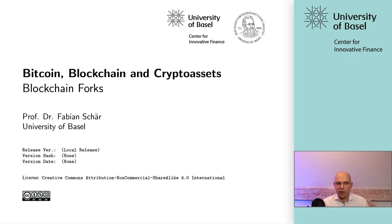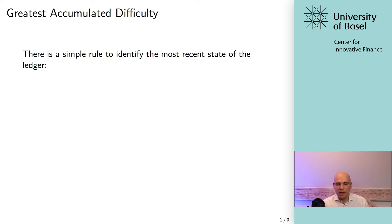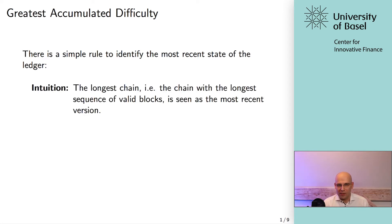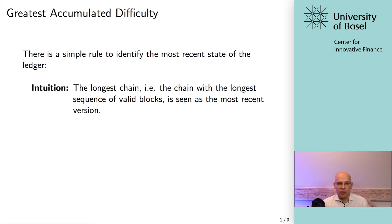We talked about consensus and the proof of work consensus mechanism. Now it's time to find out how you can identify the most recent state of the ledger. It turns out there is one simple rule: you count the blocks. You take the block sequence, look at how many blocks are part of it, and the blockchain version with the most valid blocks is the current status quo.